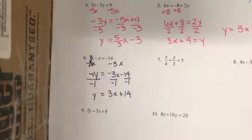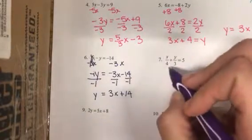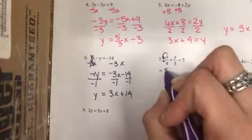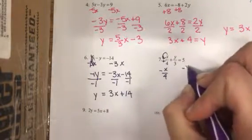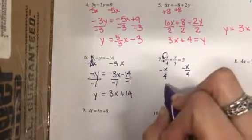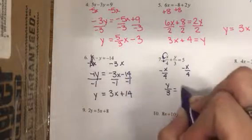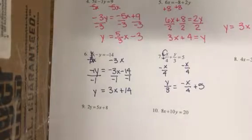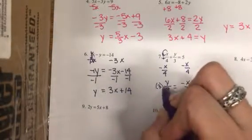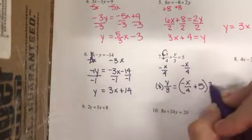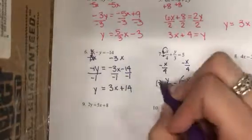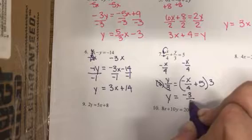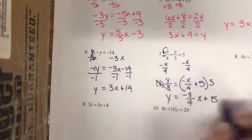Number seven: don't let the fractions throw you off — we still want to move the x first. This is a positive x over 4, so we'll move that with a negative x over 4, leaving us with y over 3 equals negative x over 4 plus 5. We'll undo division with multiplication, making sure we multiply the entire side by 3, leaving us with y equals negative three-fourths x plus 15.